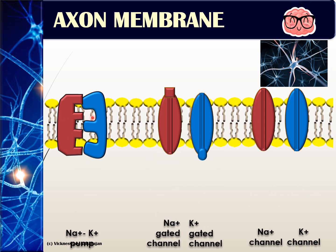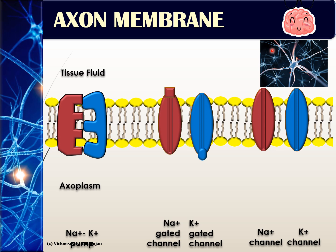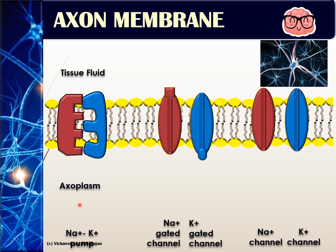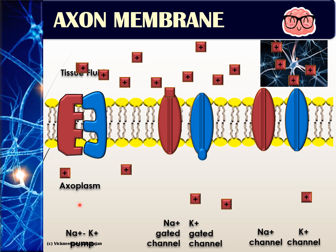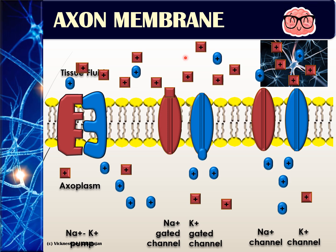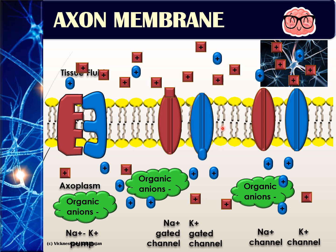Besides knowing the types of proteins in the axon membrane, we also need to know what ions are present outside and inside the axon. The black areas in the diagram are tissue fluid, and the bluish areas inside the axon are the axoplasm. Both the tissue fluid and axoplasm have a distribution of sodium ions and potassium ions. However, only the axoplasm contains organic anions that are negatively charged.